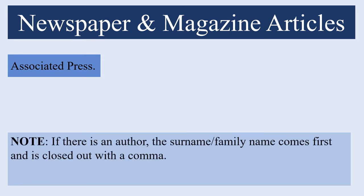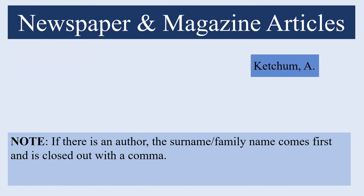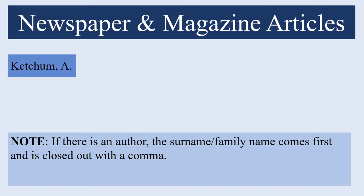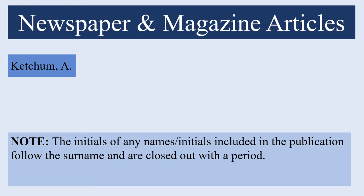If there is an individual author, we will begin the reference entry with the author's surname or family name, closed out with a comma — in this case Ketchum comma. This will be followed by the initials of any names included in the publication, closed out with a period — in this case A.P. period.